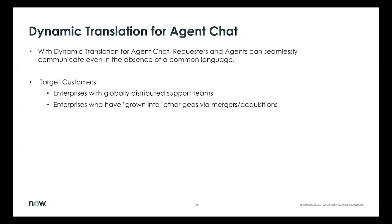Dynamic translation basically allows agents and requesters who are not speaking the same language to be able to converse with each other. At a high level, it leverages a generic translation service in the back end, takes the message the end user is sending, translates it, and shows that to the agent. Since this is using a third-party service, it's not going to be 100% accurate all the time.